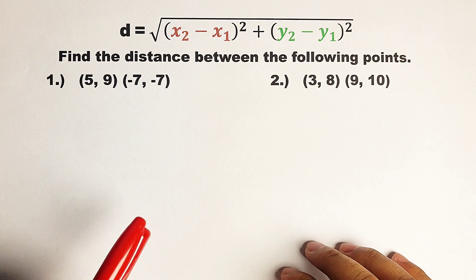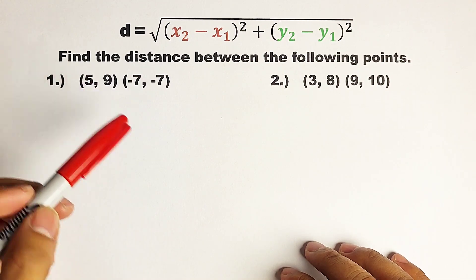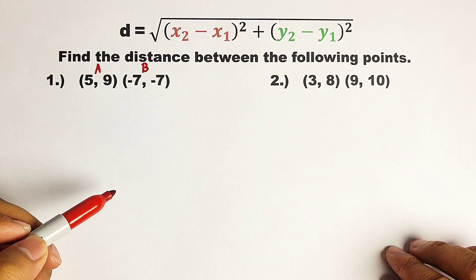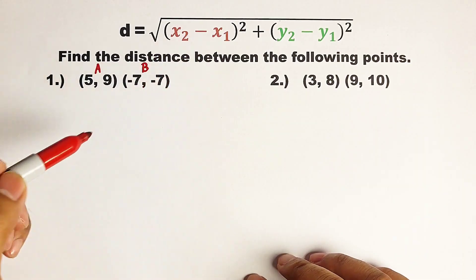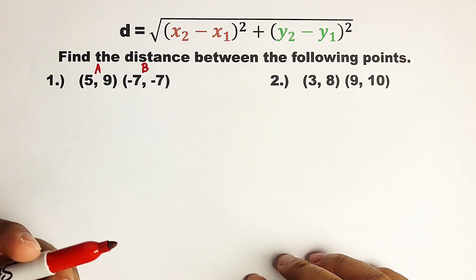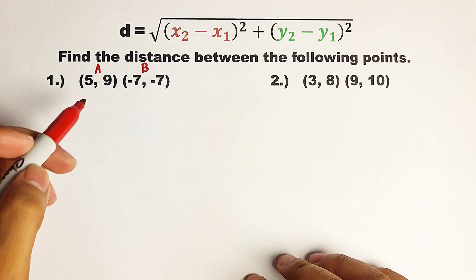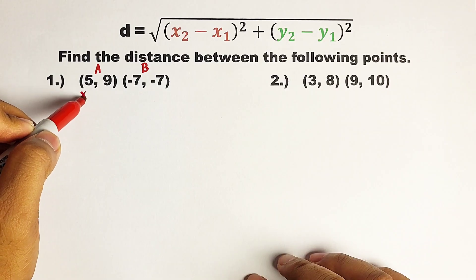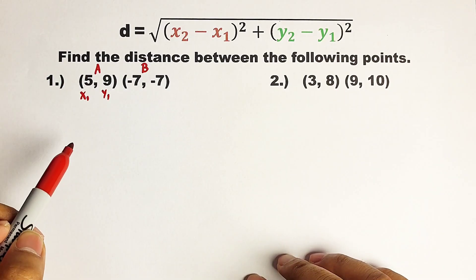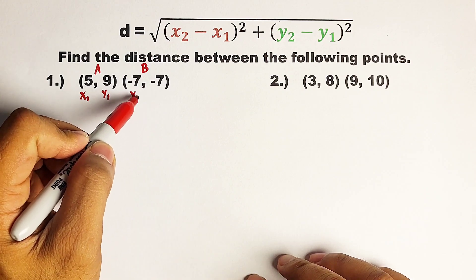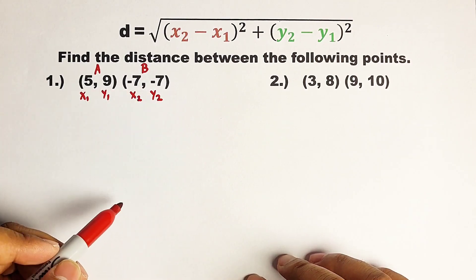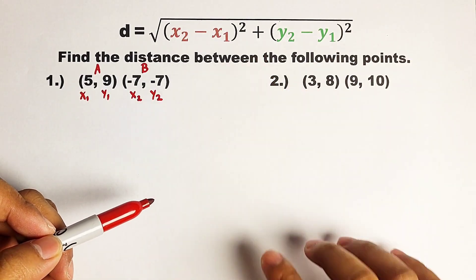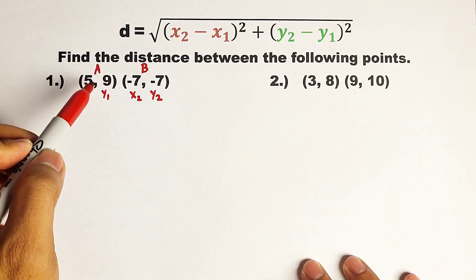So let's start with item number one. We have here 5 comma 9, and negative 7 comma negative 7. Let's say this is point A and this is point B. Before we use this formula, we need to put the label: which one is x sub 1, y sub 1, etc. Since this is the first point, your 5 is x sub 1 and 9 is y sub 1 because A is the first point. Next, this is x sub 2 and y sub 2. Since we are done putting the labels, we can use the formula. Instead of using D, we will use AB to represent the distance from point A to point B.